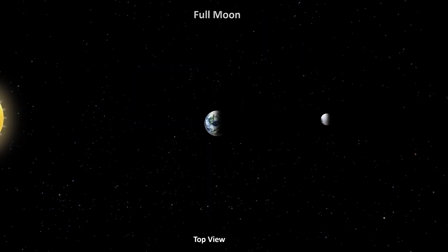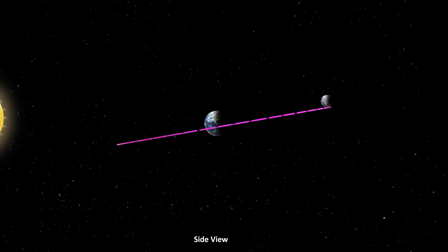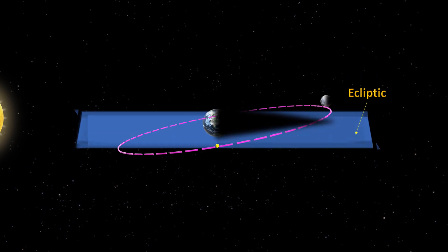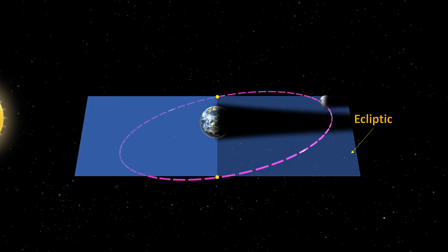We have a full moon every month, then why don't we have an eclipse every month? This is because the plane of the Moon's orbit is inclined at a mean angle of 5.145 degrees to the plane of Earth's orbit around the Sun, known as the ecliptic. So the Earth, the Moon and the Sun don't always align.